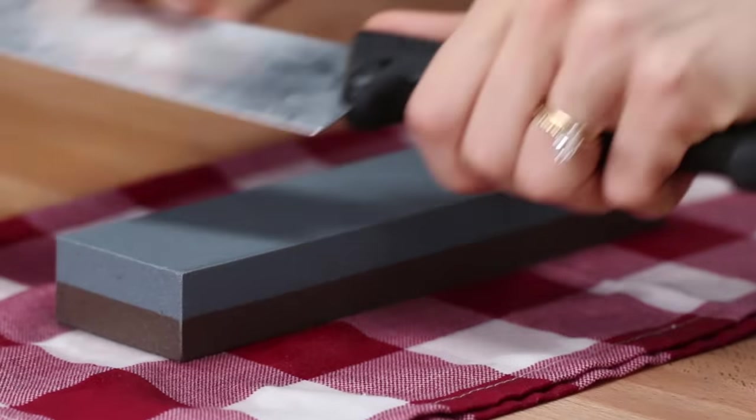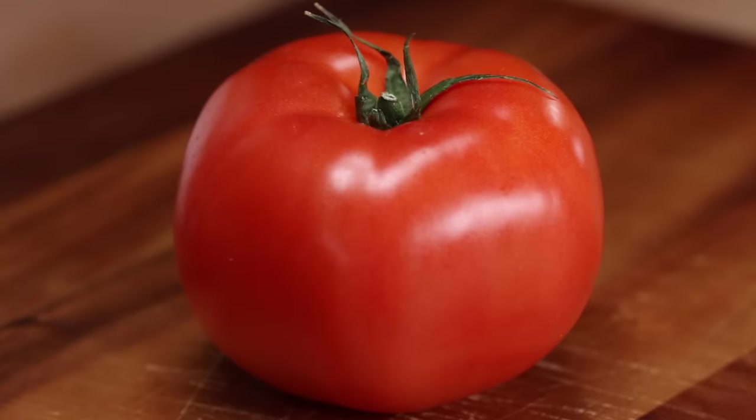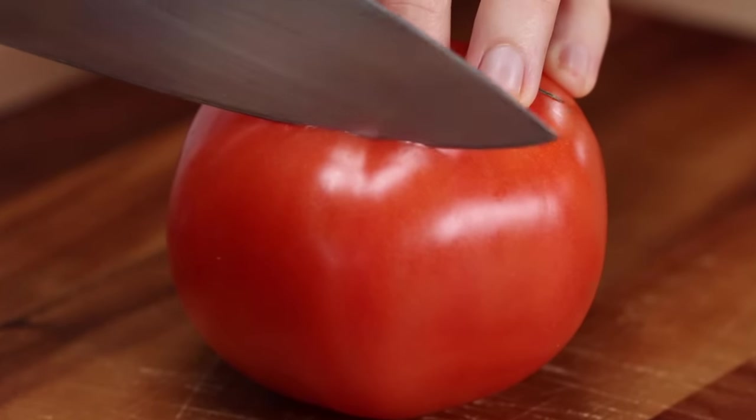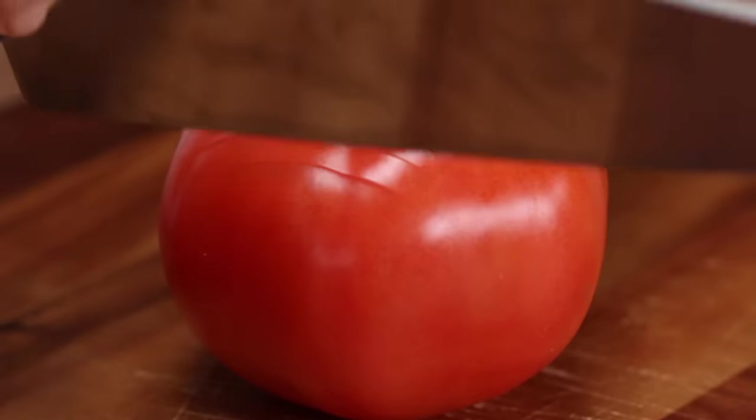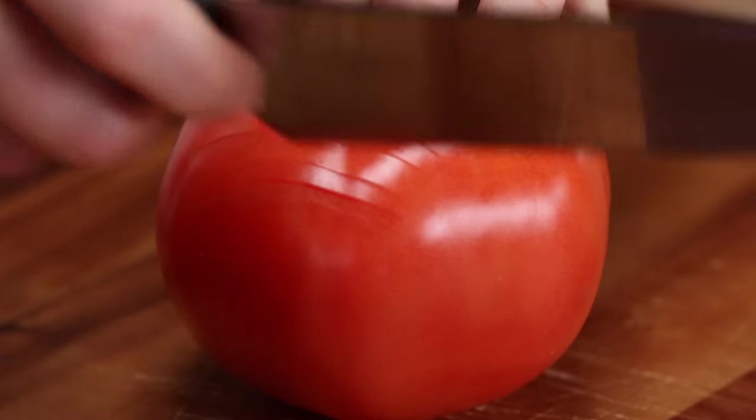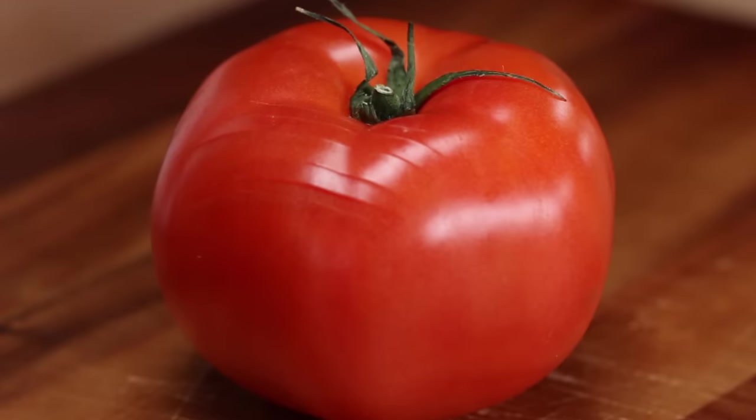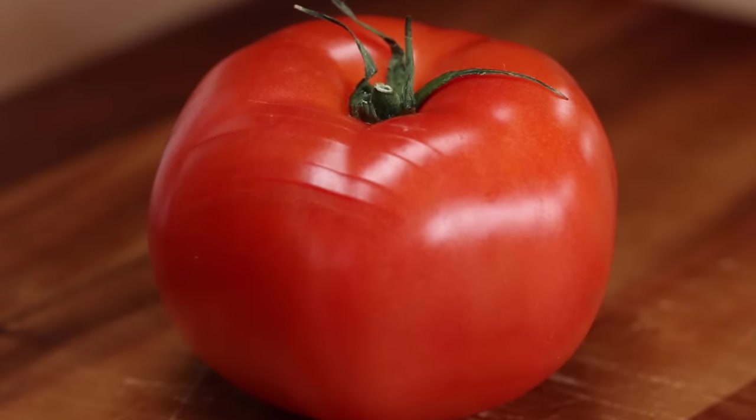And once you feel like you've gotten your knife pretty sharp, you can do the tomato test. And what you want to do here is test each part of the blade to make sure that you evenly sharpened your knife. And if there is a little dull spot, you can just go back to the wet stone. You're going to still do that same sweeping motion you did before, but you're just going to take extra care on the section of the knife that was a little bit duller, making sure that you're pressing down evenly on that part as well.